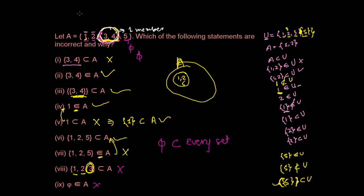I hope you understand this and can distinguish between member and subset. Keep in mind: subsets can be members, but members cannot be subsets. To make a member into a subset, you need to enclose it in curly brackets — then the newly formed set is the subset of the given set. If there is any confusion, feel free to comment below this video. If you like my videos, please like and subscribe to our channel. See you in the next video — goodbye.